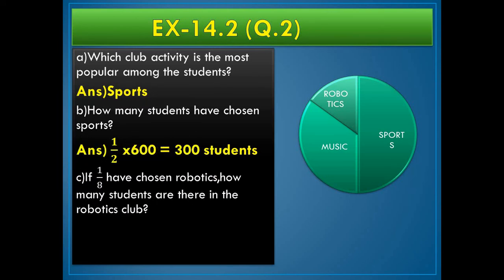If 1 by 8 have chosen robotics, how many students are there in the robotics club? So it is 1 by 8 into 600 that is 75 students.